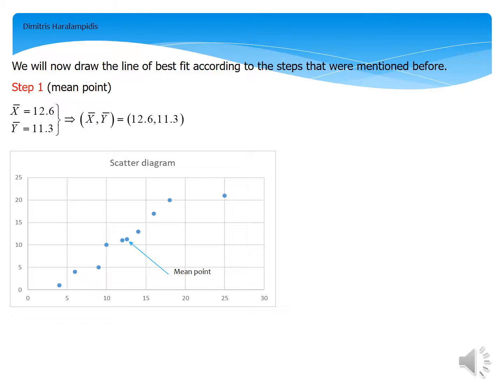In first step, we start by defining by calculating the mean point. So we just calculate the mean of X, which is equal to 12.6, and the mean of Y, which is equal to 11.3.